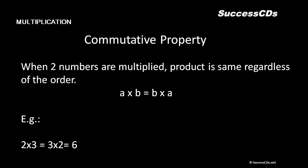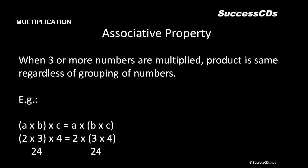Next we move forward to multiplication properties. The first one is the commutative property: when two numbers are multiplied, the product is the same regardless of the order. That means a into b equals b into a — order does not matter at all. For example, two into three is six, and so is three into two.